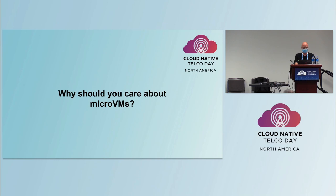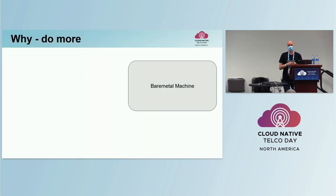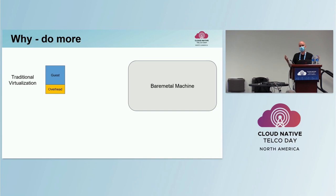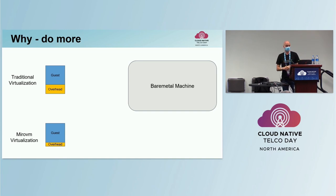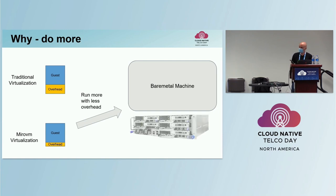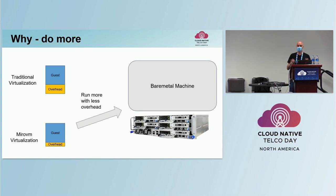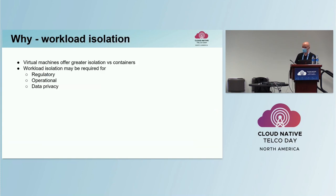Moving on to why should you care about micro VMs? Fundamentally, it allows you to do more with the same amount of hardware. If we have a bare metal machine and I want to run a VM on there, there are two parts: the resources required for the guest and then there's an overhead per VM. If I'm using a micro VM implementation, the resource requirements for the guest are the same but the overhead is less — so I can run more on that machine. And if you think about edge and far edge where the amount of compute is limited, this really makes a difference because it allows you to run more things on that machine.